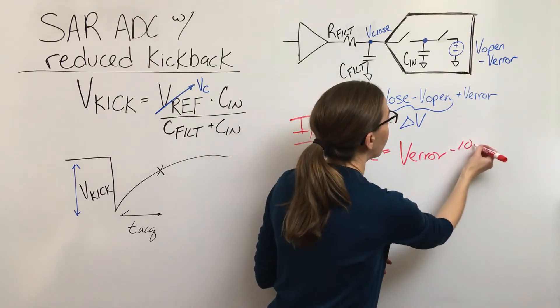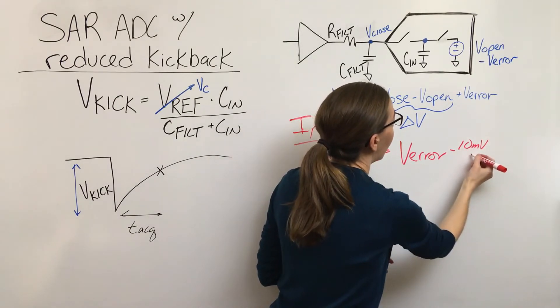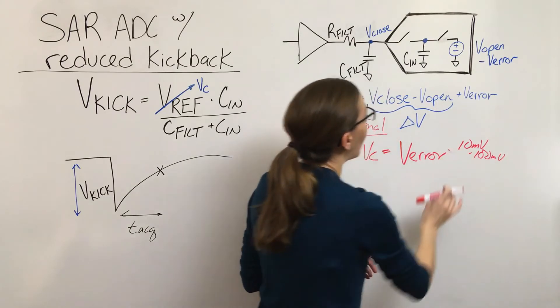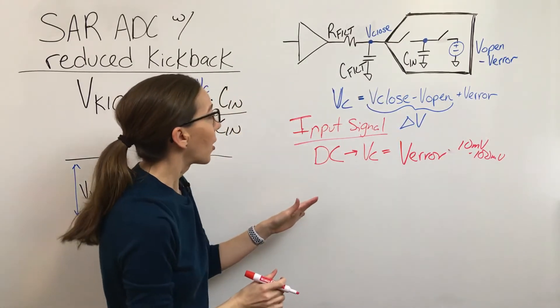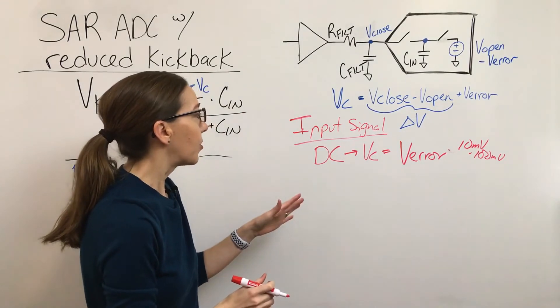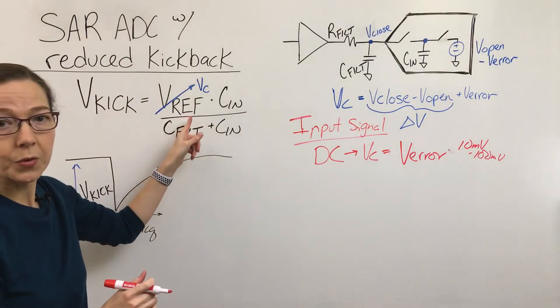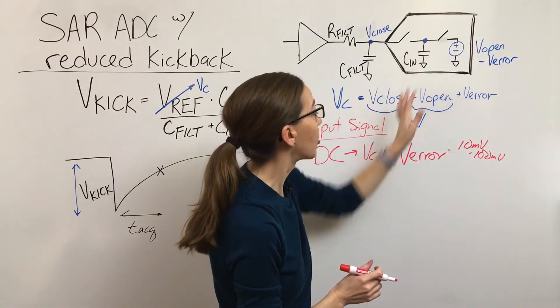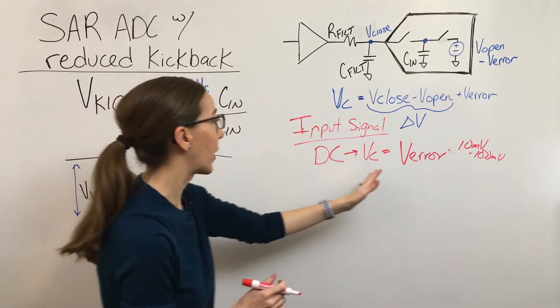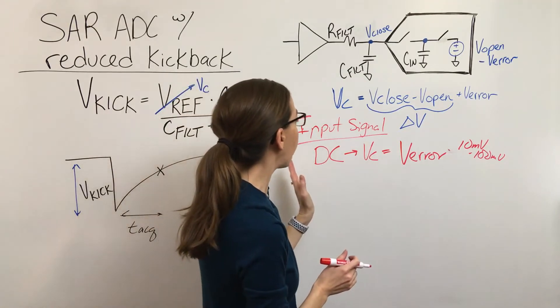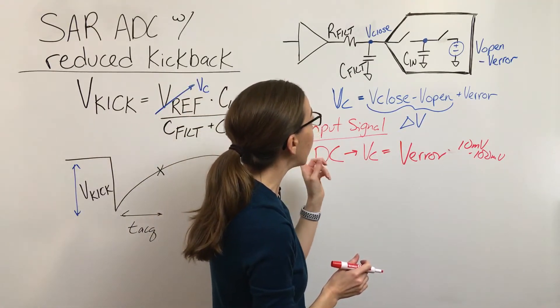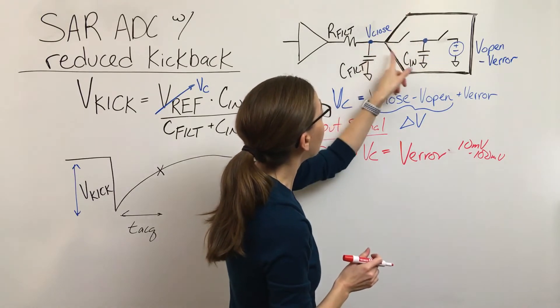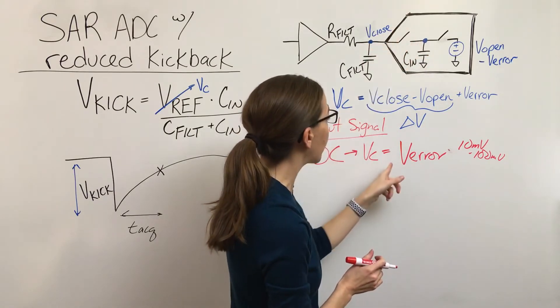That's just a rough number, but just to give you an idea. So that is much, much smaller than if you had to settle the entire reference voltage for the cases where this node is discharged to ground. And that's the whole point of this circuit - for a DC or a low frequency input signal you have a very small amount of voltage difference between these nodes to settle. So this is our best case.